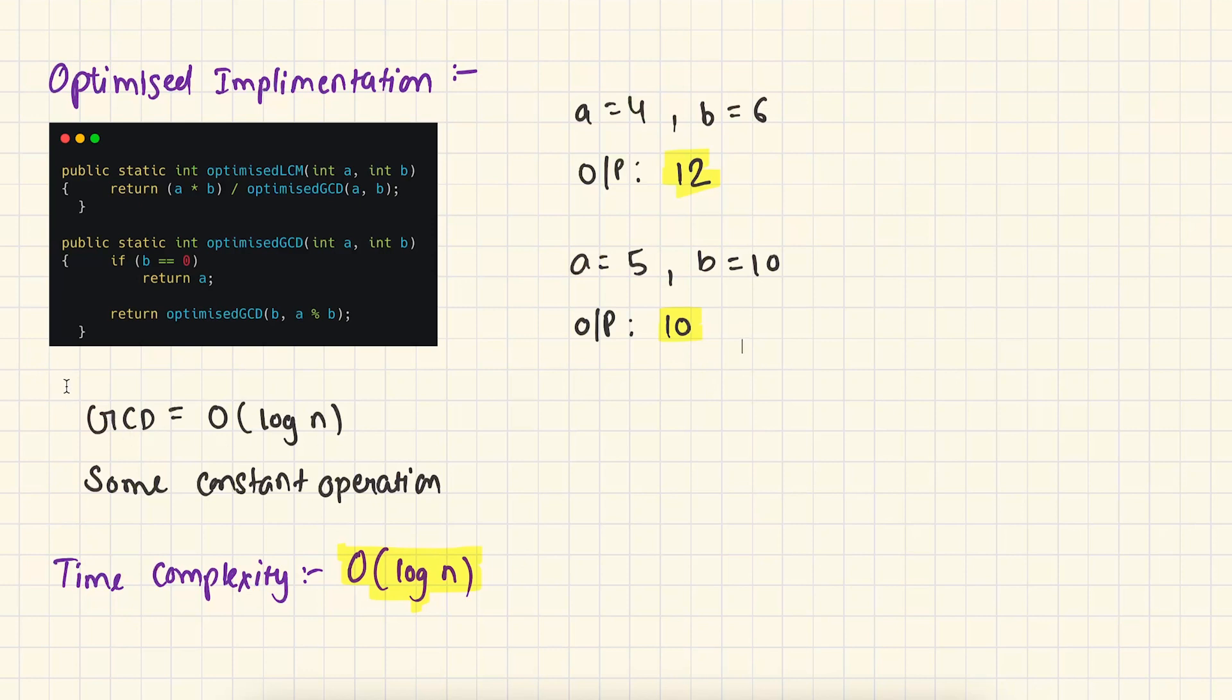Now let's talk about the time complexity of this function. We know that the time complexity of GCD function is O(log n), and we saw this in the previous video. Apart from this, we are simply doing some constant operation here. So the overall time complexity of this function is going to be O(log n). I hope now you have a clear understanding about how to calculate LCM of any number. What do you have to do? You simply have to calculate GCD of a number and then divide it by A times B.